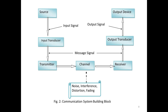Looking at the building block, you see the source, then the input transducer to the transmitter, then through the channel to the receiver, then the output transducer to the output device. Importantly, along the channel you have problems associated with noise, interference, distortion, and fading.